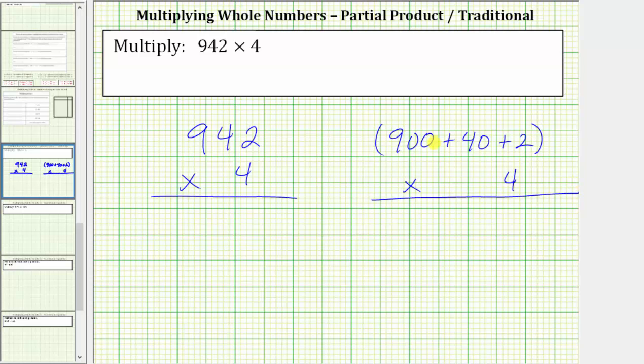Now we multiply the expanded form by four. Four times two is equal to eight. Four times 40 is equal to 160. It is important that we line up the corresponding place values. So for 160, we have a zero in the ones, a six in the tens, and one in the hundreds.